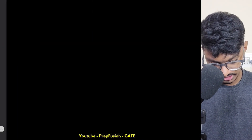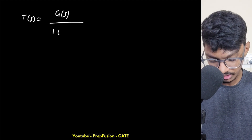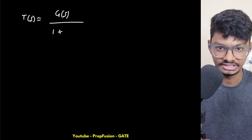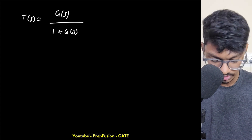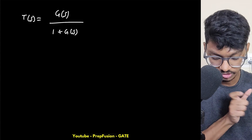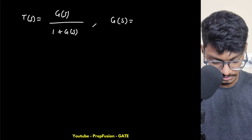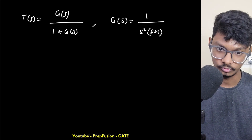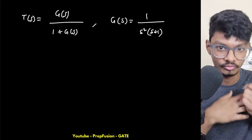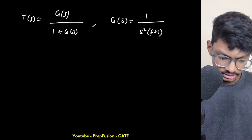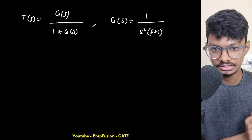For a unity feedback system, T(s) = G(s) / [1 + G(s)]. Let's take a simple type 2 example: G(s) = 1 / [s²(s+1)]. This has two poles at s = 0, making it type 2, and is third order.